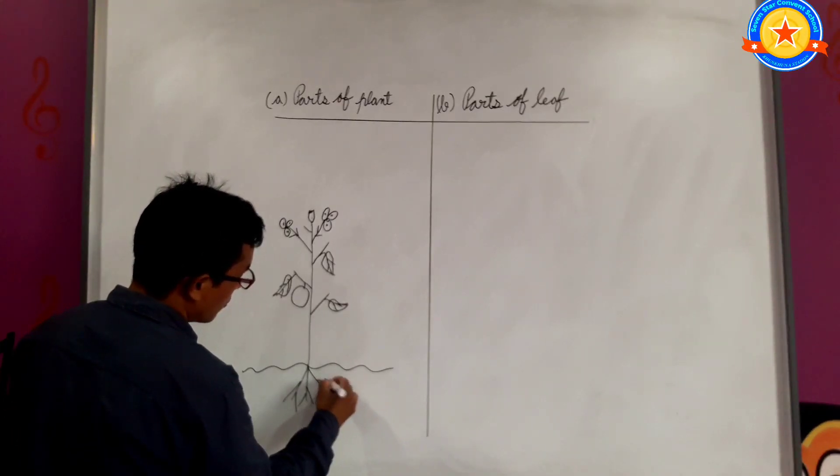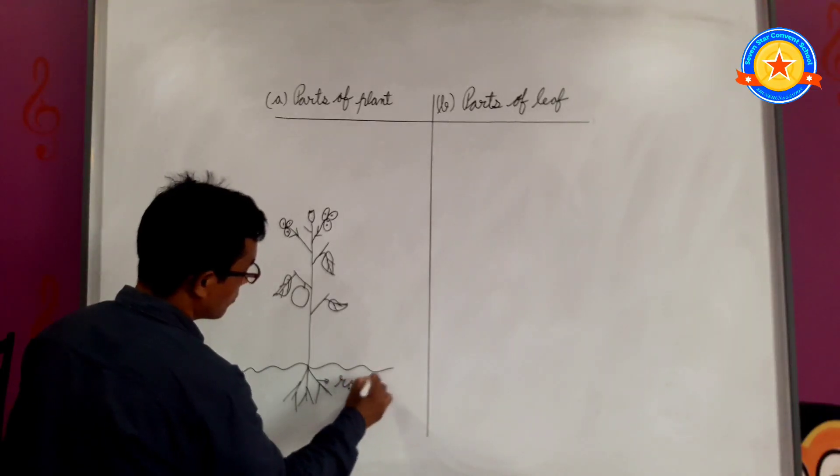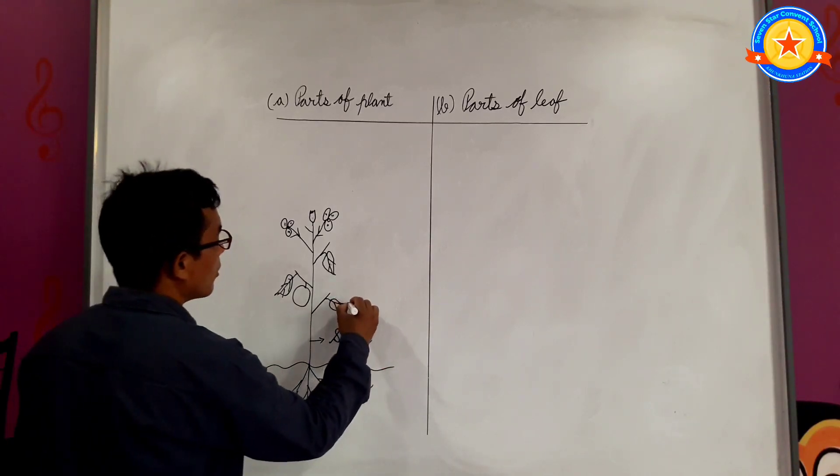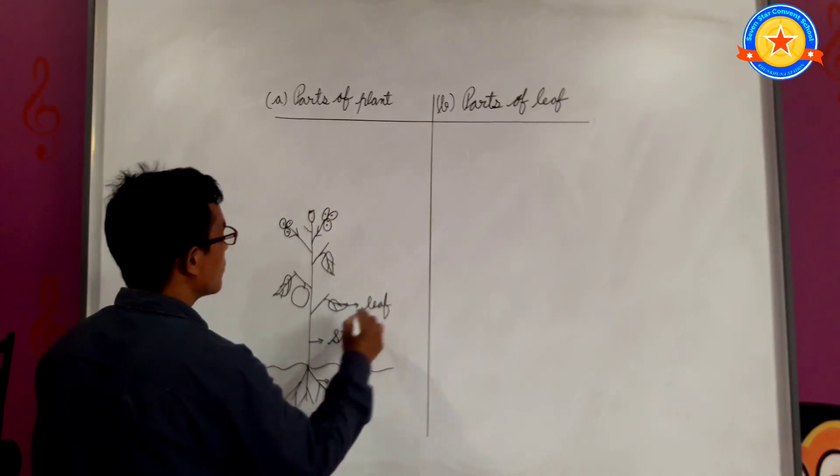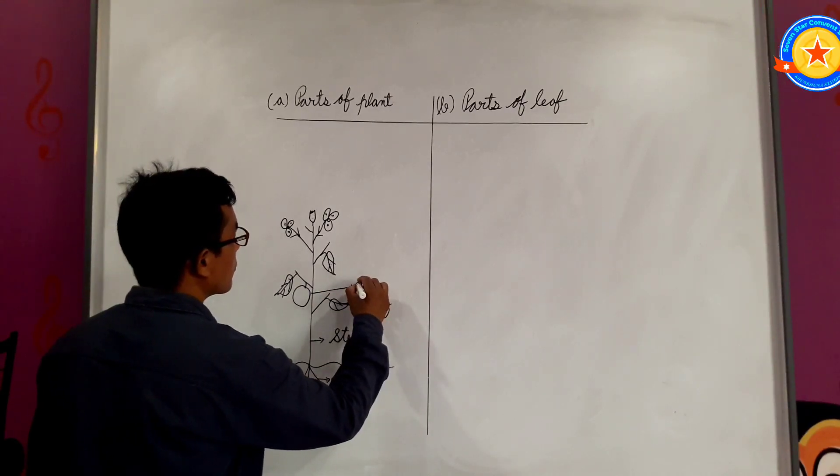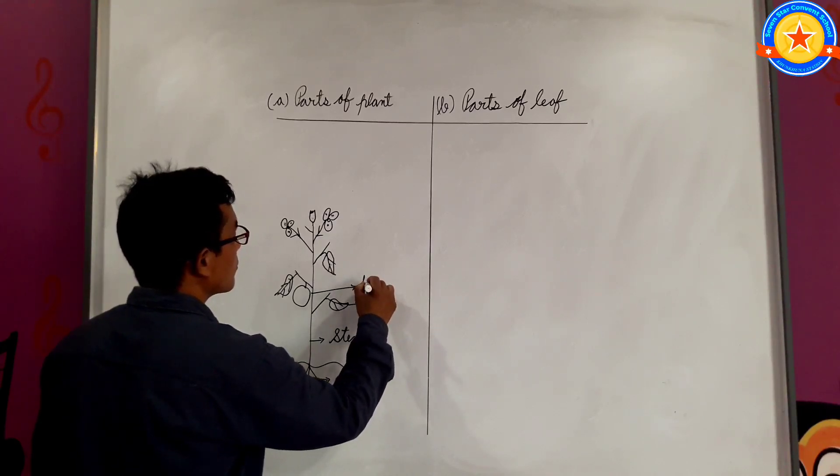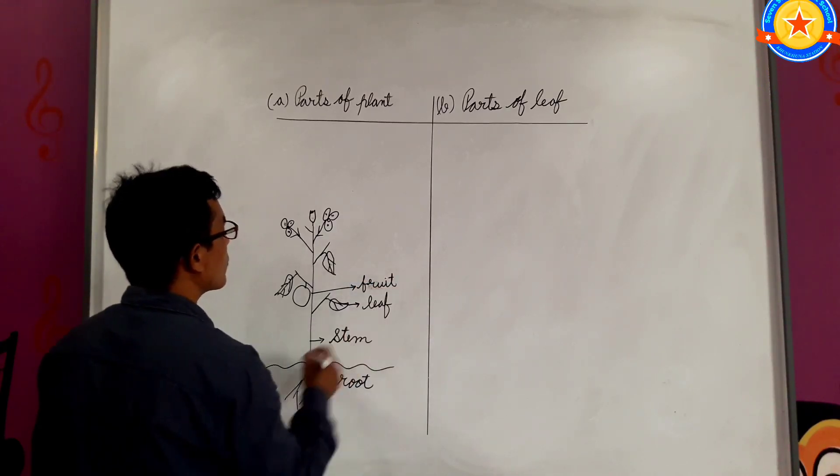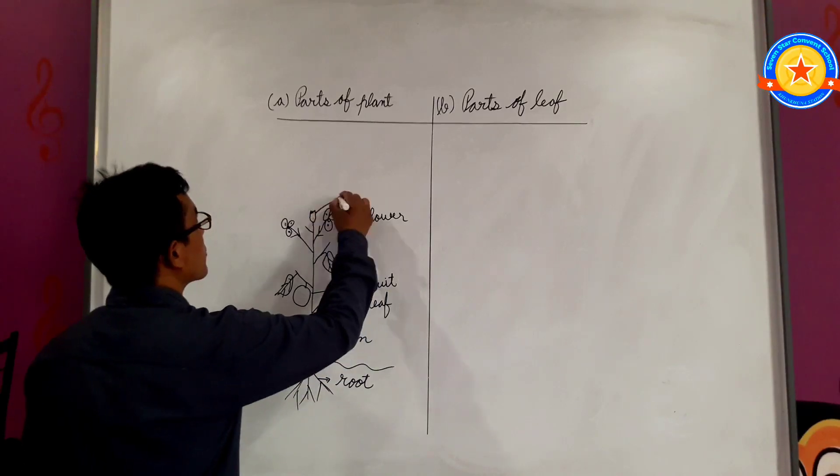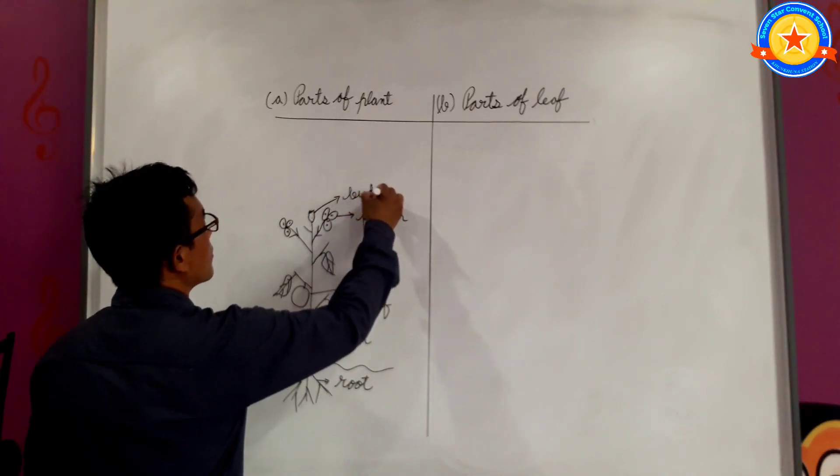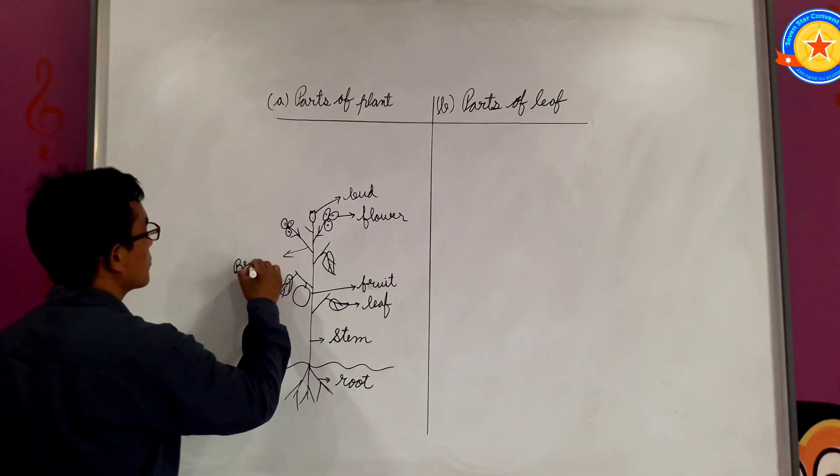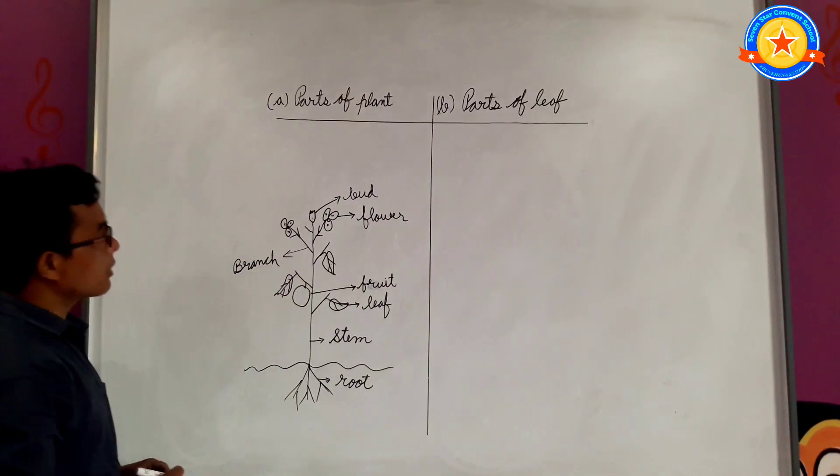This is called root. This is called stem. And this is called leaf. And this is fruit. This is flower. This is root. And this is called branch. This is the complete parts of plant.